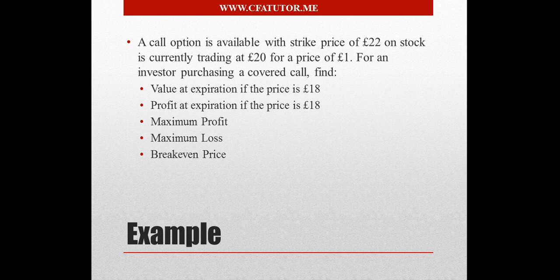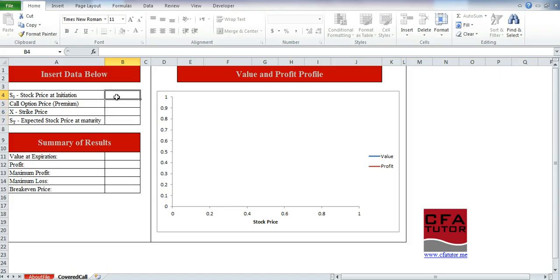if the price is £18, maximum profit, maximum loss, and breakeven price. So if you go to the Excel sheet over here and basically enter the information that you have, which is the stock price at initiation of £20, the premium of £1, the strike price £22, and the stock price at maturity of £18,